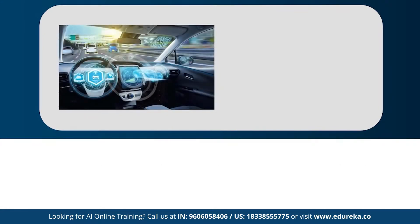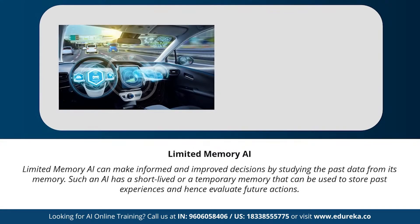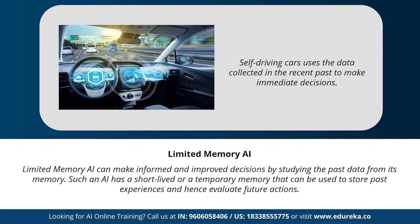Next, we have limited memory AI. Like the name suggests, limited memory AI can make informed and improved decisions by studying past data from its memory. Such AI has a short-lived or temporary memory that can be used to store past experiences and evaluate future actions. Self-driving cars are a prime example — they use sensors to identify civilians crossing roads, steep roads, and traffic signals to make better driving decisions and prevent future accidents.